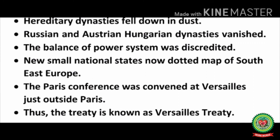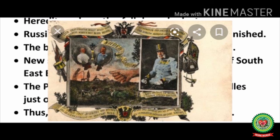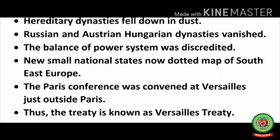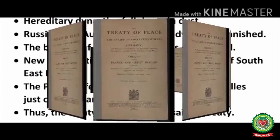Hereditary dynasties fell. The Russian and Austro-Hungarian Habsburg dynasties vanished. The balance of power system was discredited. New small national states now dotted the map of southeastern Europe. The Paris Conference was convened at Versailles, just outside Paris — thus the treaty is known as the Treaty of Versailles. New nations emerged on the map of Europe, such as Poland and Czechoslovakia. The old royal dynasties of Europe came to an end, and the balance of power was totally disrupted.